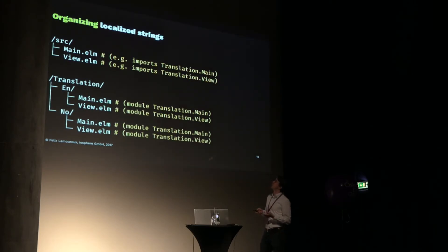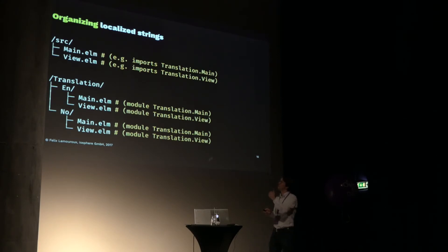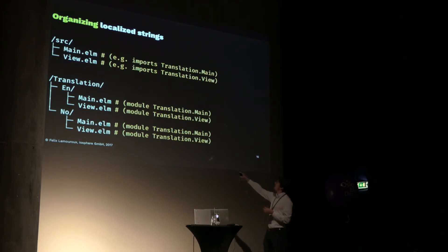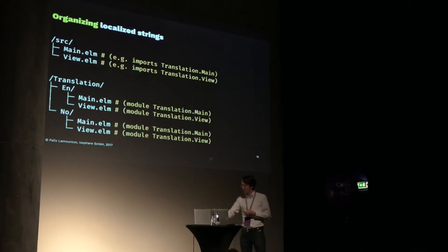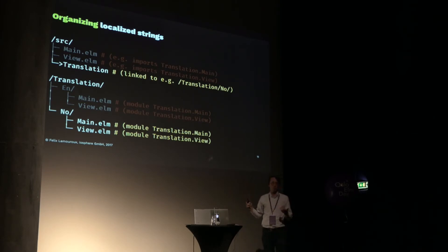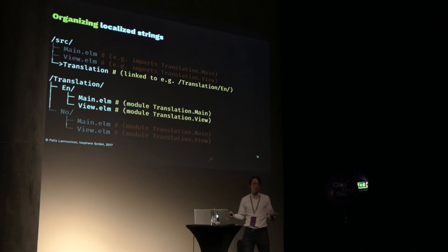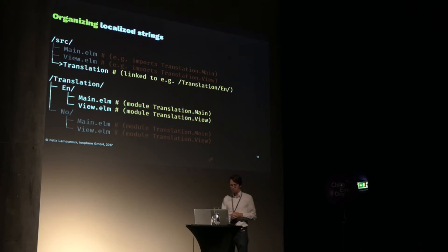The way we propose to structure your Elm project is to have your source folder with your main Elm app, and next to it a translation folder with one subfolder per language. The trick is that you omit the language from the module names — so instead of translation.en.main, it's just translation.main. That's basically the whole magic of this talk. You add a symlink to the language you currently want to compile, and if you want to change the language, all you do is change the symlink without touching any source files, because the import statement just reads 'import translation.main exposing everything.'